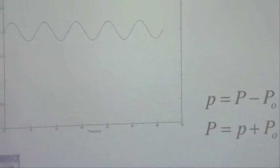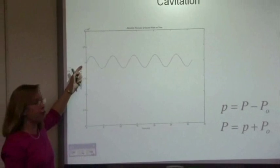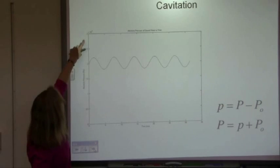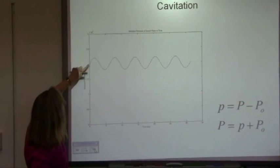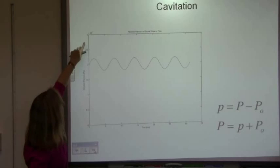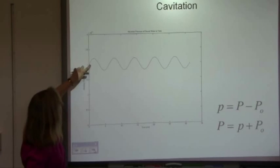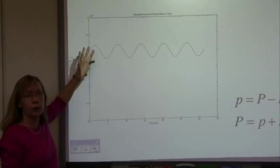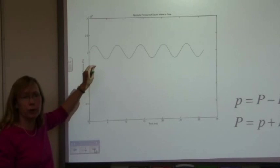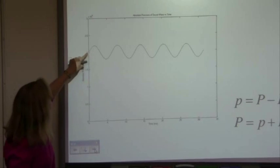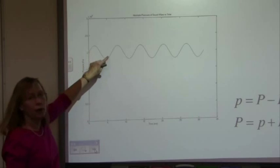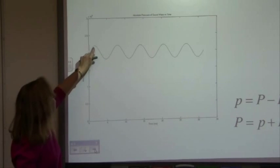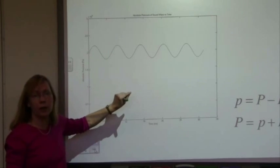And so in this graph, I have a sine wave. You probably can't read the scale here, but this is 2 times 10 to the fifth pascals. This would be an ambient pressure equal to the pressure about 10 meters down in the ocean. If I'm 10 meters down in the ocean and I have a small amplitude sound wave, then the total pressure of that wave might look something like this.